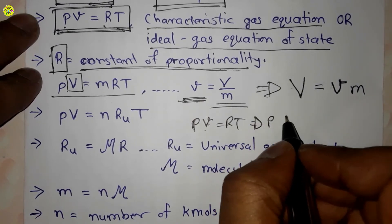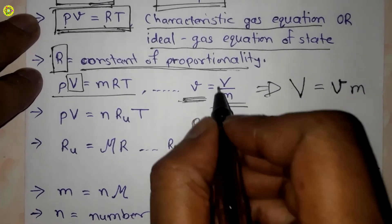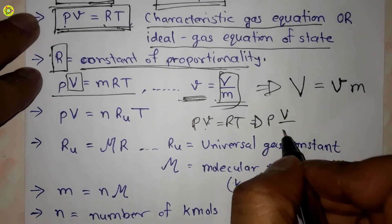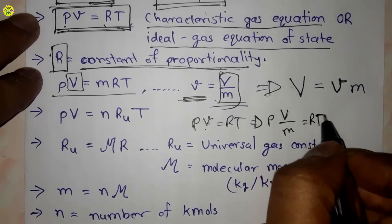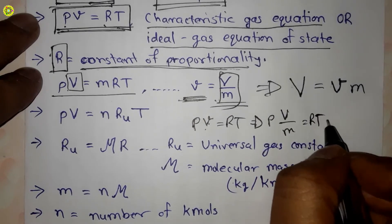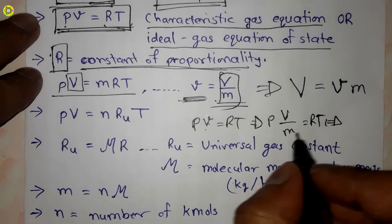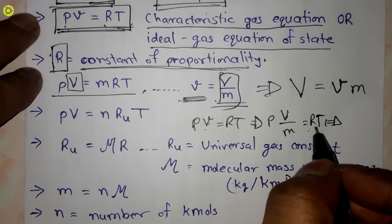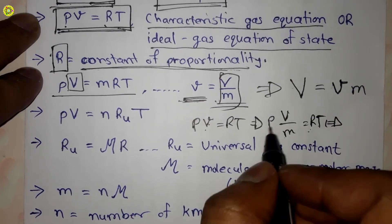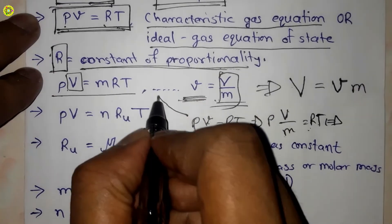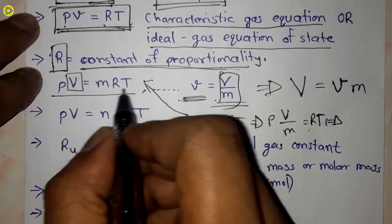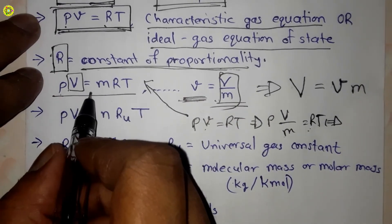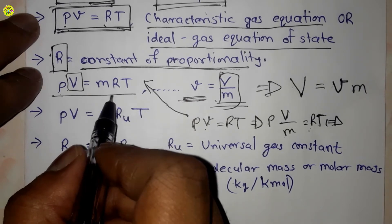We put P and capital V upon m equals RT. When m is moved to the right-hand side, we get P capital V equals mRT.